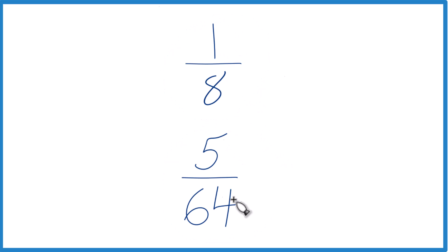You might just be able to reason this out, or you could take a calculator. One divided by eight, get a decimal. Five divided by 64 and get a decimal. Just compare the decimals.